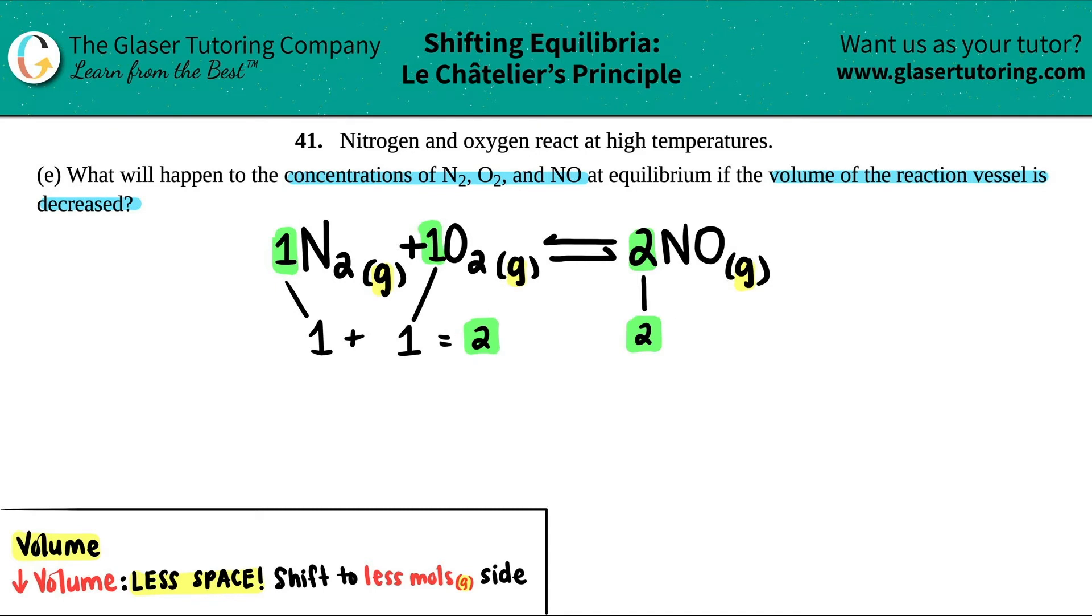So in this case, if you lower the volume, there would be no effect. Basically, nothing would happen. So what will happen to the concentrations of N2, O2, and NO? All three of them, they would not change. No effect, no change, because you have two moles on the left side, two moles on the right side. They're equal. There's no less mole side. So nothing happens.